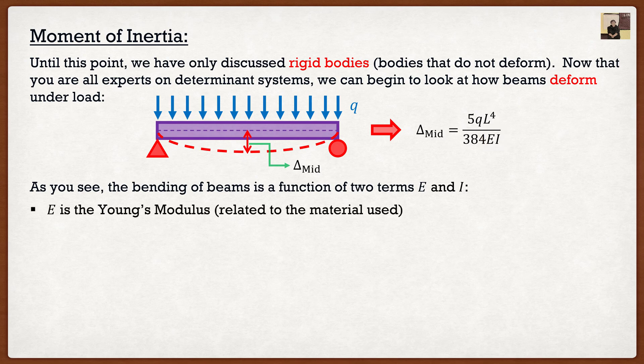E is what is actually referred to as the Young's modulus. And it's related to the material that we use. It makes sense. If I were to take my ruler and bend it, well, I can only bend it this much because it's made out of cheap plastic. If I were to take something much stiffer, like my iPad, which is made of metal, I can't exactly bend it. Well, at least I don't want to try to bend it or else we would be having a very bad time.